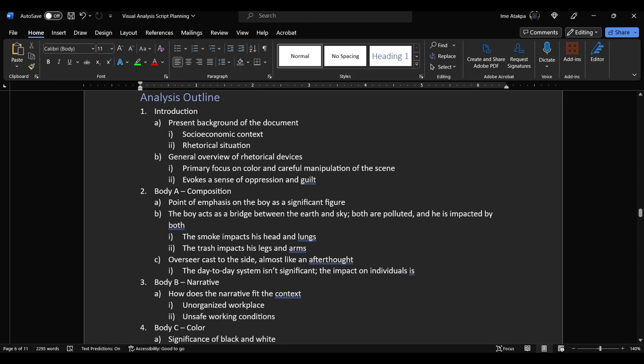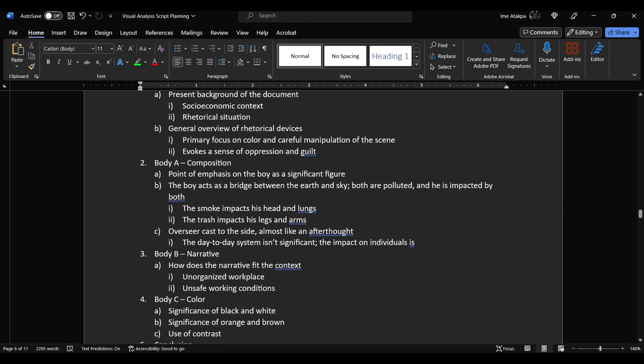So for this basic introduction, I'm going to present the background, talk about socioeconomic context, maybe if I can, but mostly just touch on the rhetorical situation, overview of the significant rhetorical devices. And then first body paragraph is going to be about the composition. So I'm going to be looking at the emphasis, framing, things like that.